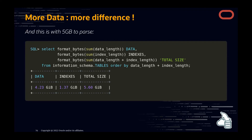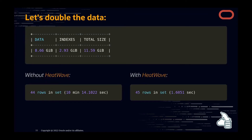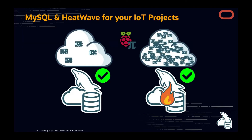This is with 5 gigabytes to parse. Let's double the data to 11 gigabytes: without HeatWave it takes 10 minutes; with HeatWave it takes 1.6 seconds. The row counts differ because HeatWave gives real-time analytics — devices continued collecting data in the meantime. For IoT projects: if you have a small number of devices and little data, MySQL Database Service alone is sufficient. If you have lots of data and need analytics at scale, MySQL HeatWave is made for you.